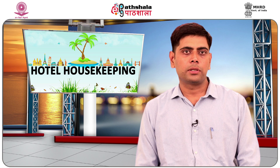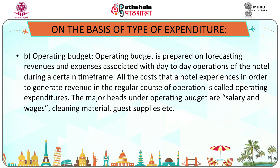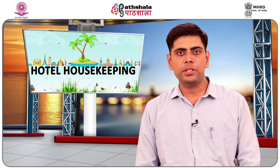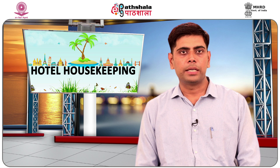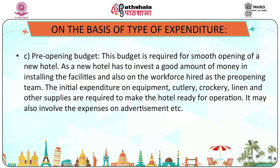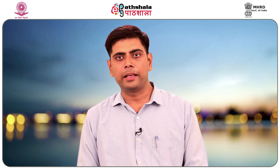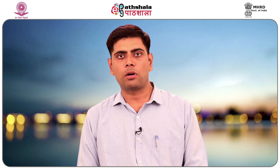The second type is the operating budget, prepared by forecasting revenues and expenses associated with day-to-day operations of the hotel during a certain timeframe. All costs a hotel experiences to generate revenue in the regular course of operation are called operating expenditures, with major items including salary and wages, cleaning materials, and supplies. The third type is the pre-opening budget, required for the smooth opening of a new hotel, covering initial expenditure on equipment, cutlery, crockery, linen, and other supplies needed to make the hotel ready for operation, and may also involve advertising expenses.